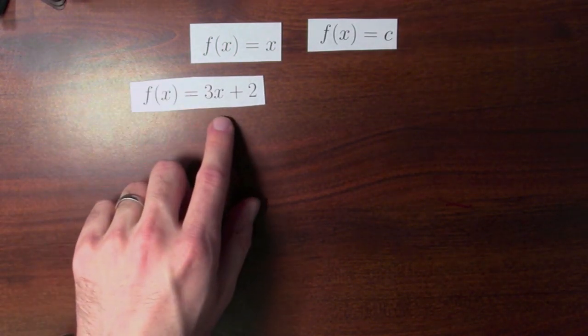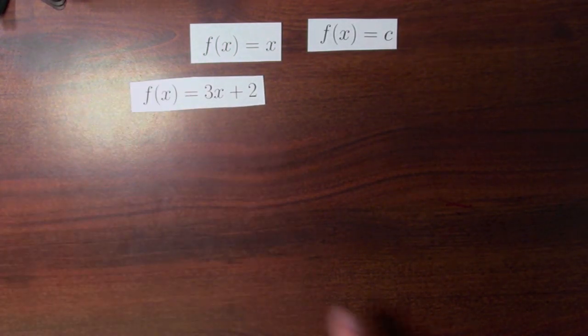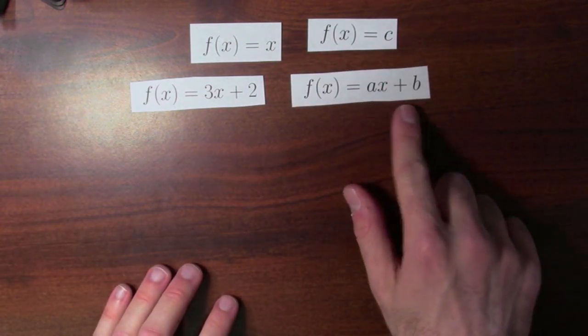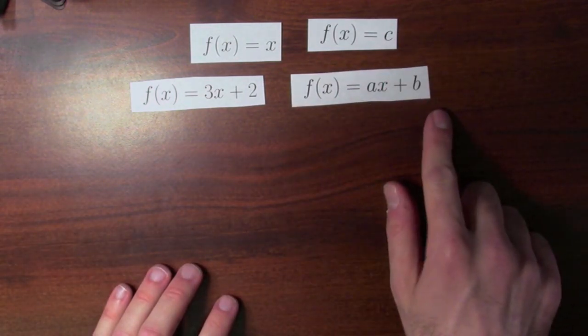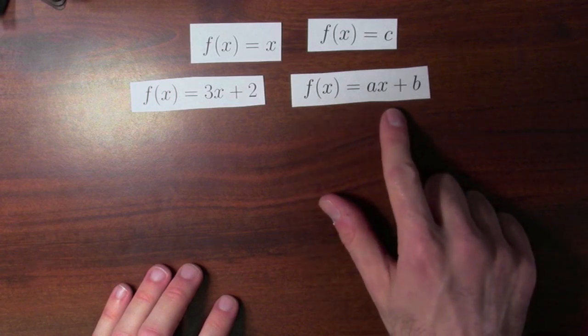Here's a function, f of x equals 3x plus 2. And if you're thinking about stuff like that, why not stuff like this? Pick two numbers, a and b, and then you can define a function like this: f of x equals ax plus b.